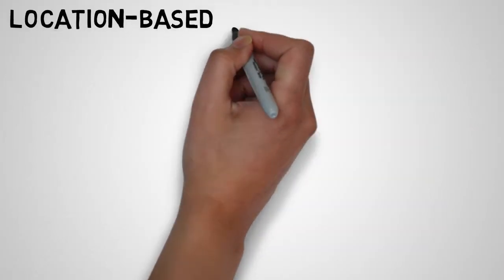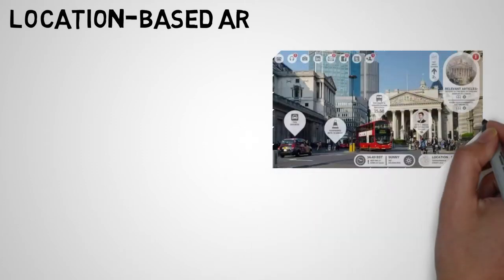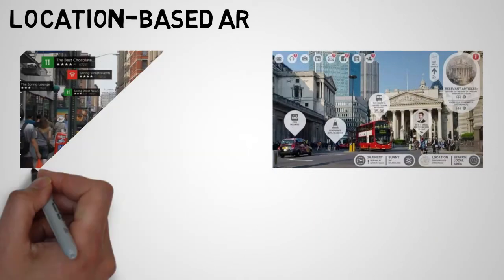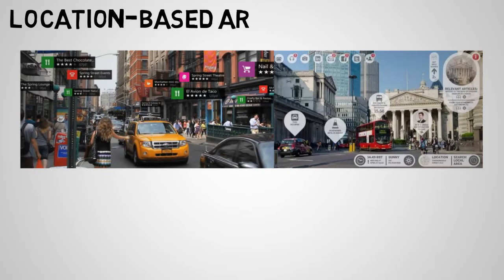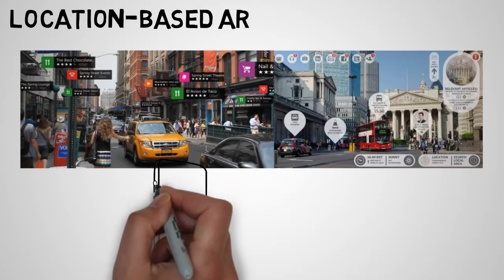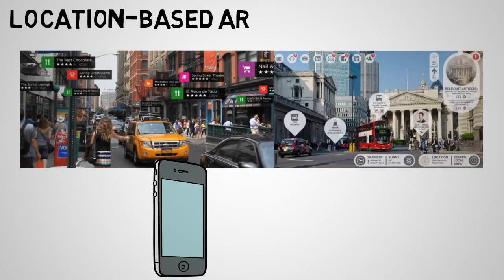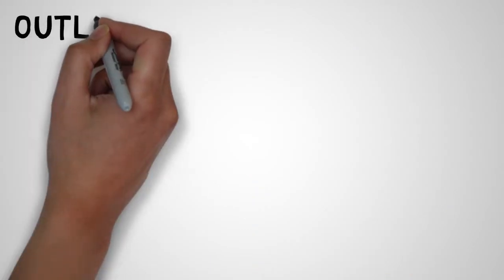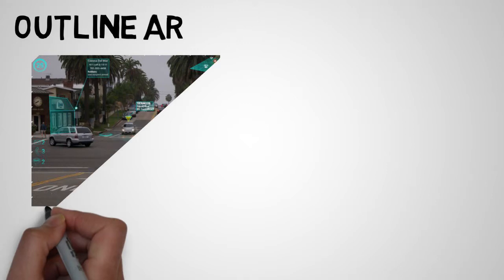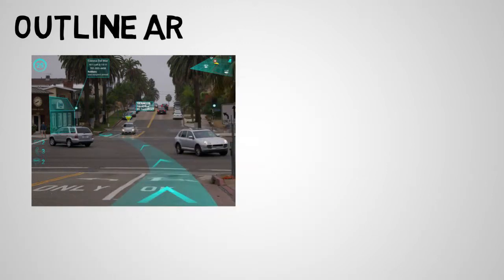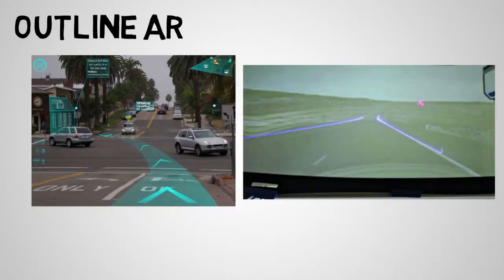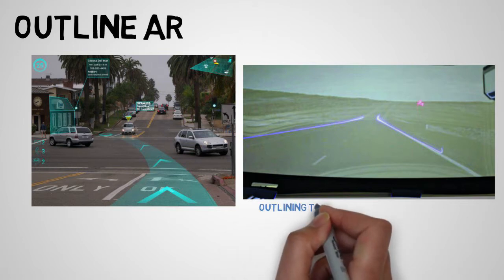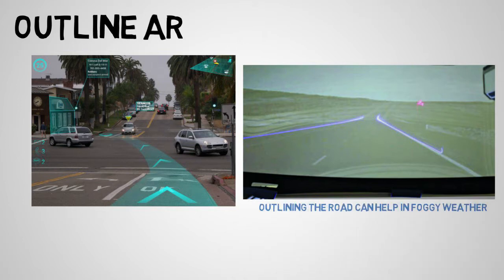The next one is location-based AR, which is one of the most widely implemented applications of AR. The strongest force behind this is the easy availability of GPS in smartphones and the features they provide in terms of location detection. Location-based AR is mostly used to help travelers on their journey. Outlining augmented reality is not too popular compared to the others, but has its uses in driving environments to outline lanes, people, and objects when visibility is limited.